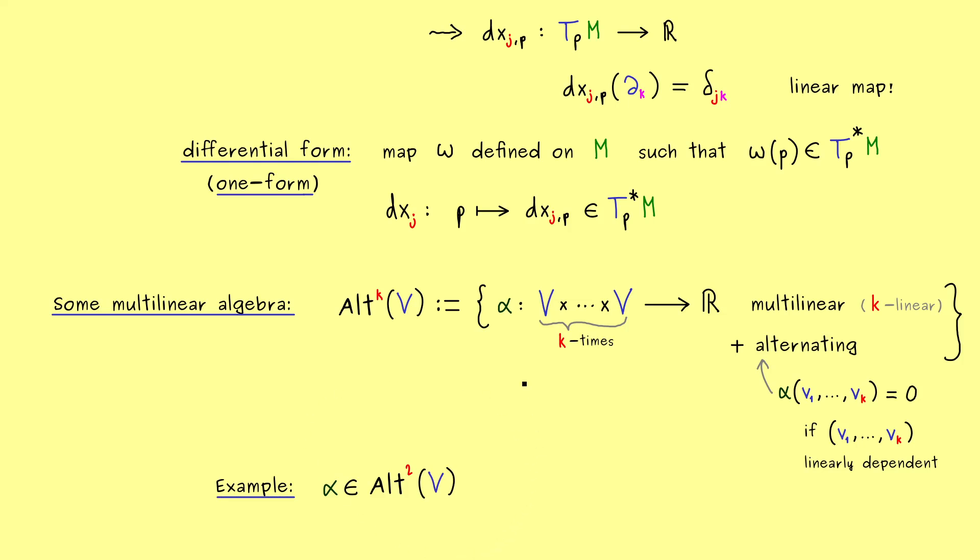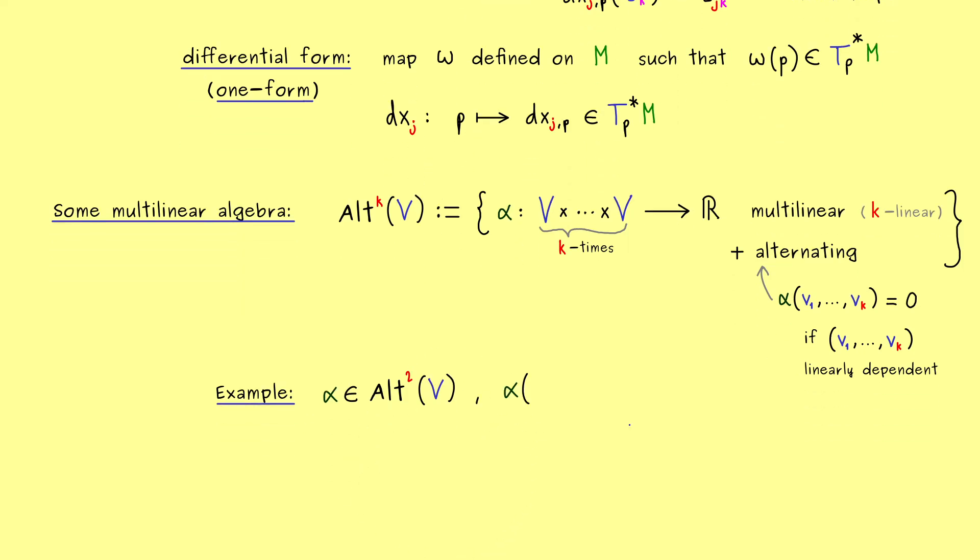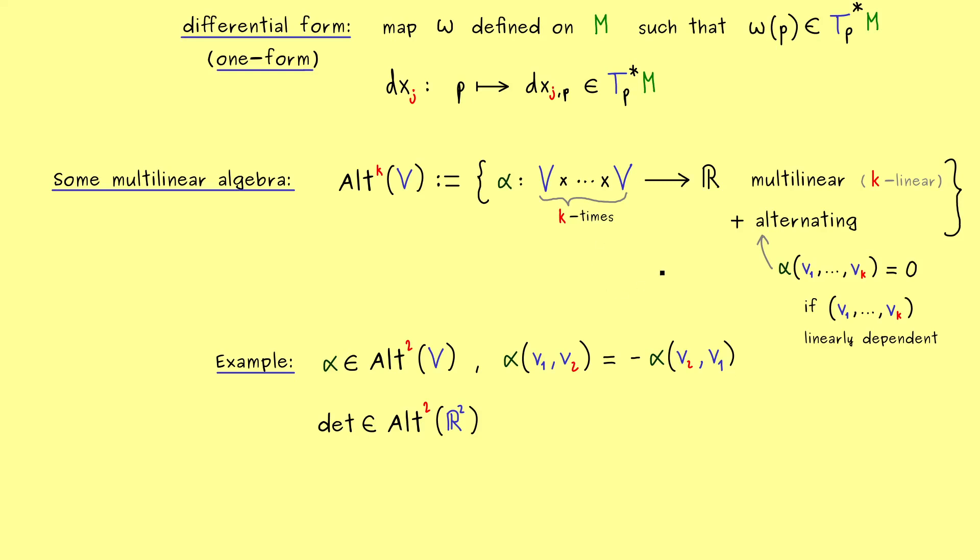Let's quickly look at an example for a bilinear form that is alternating. Our alpha comes from Alt^2. From the alternating property, if we exchange exactly two vectors in the map alpha, nothing really changes except for the sign. Alternating means we add a minus sign if we exchange two vectors. The determinant map on R² is an example here, but it's by far not the only example.